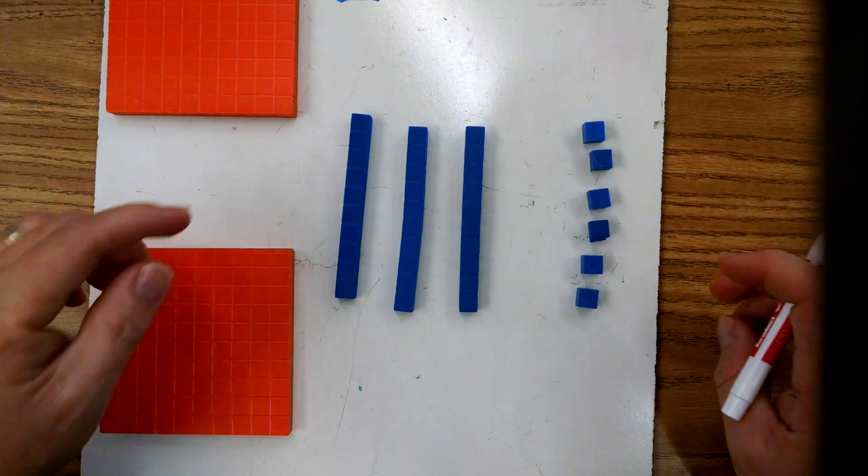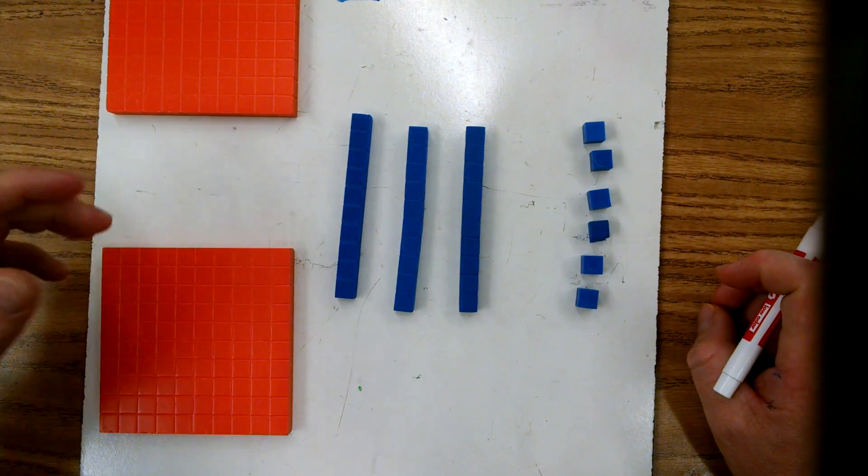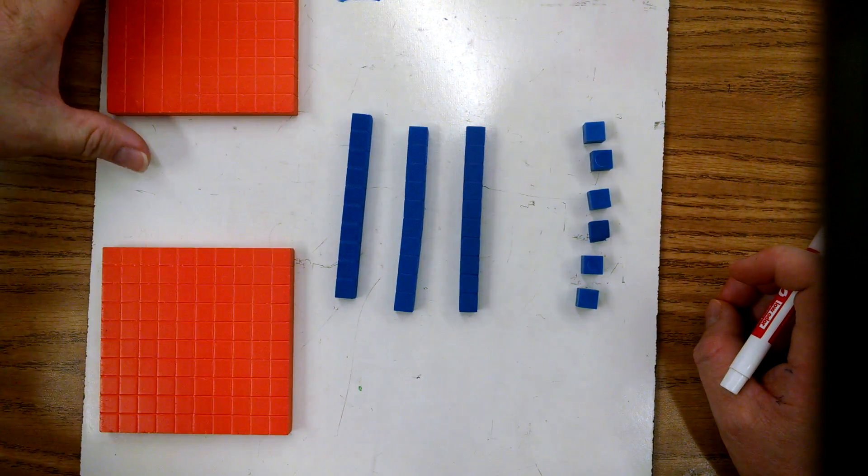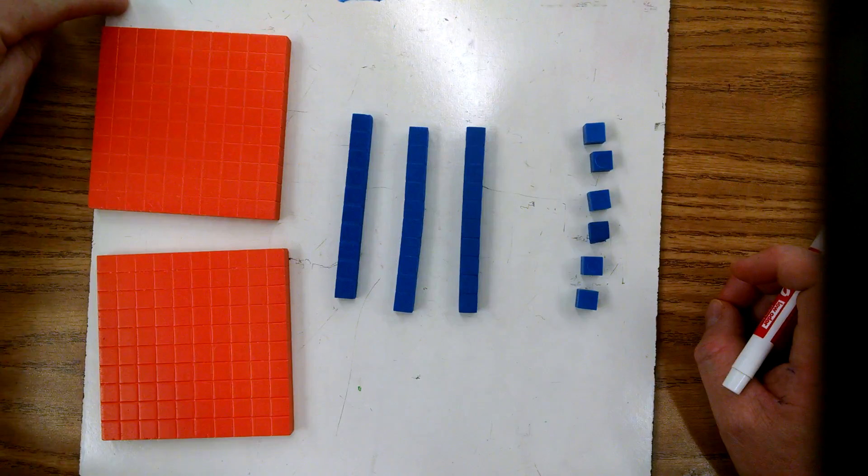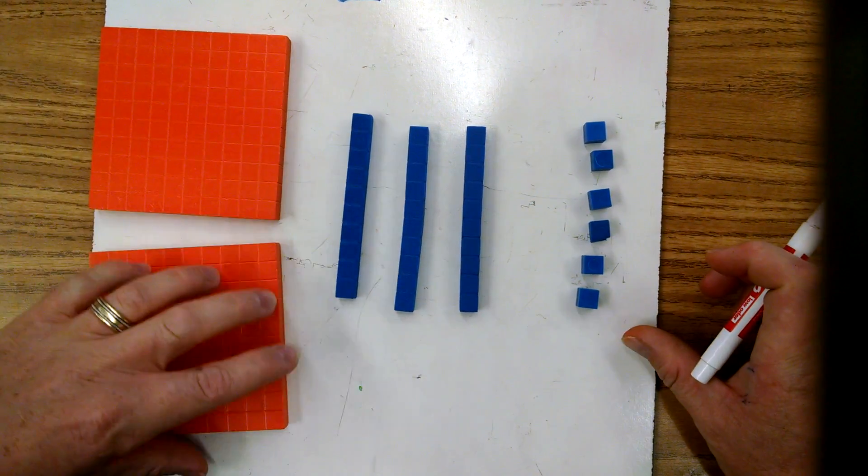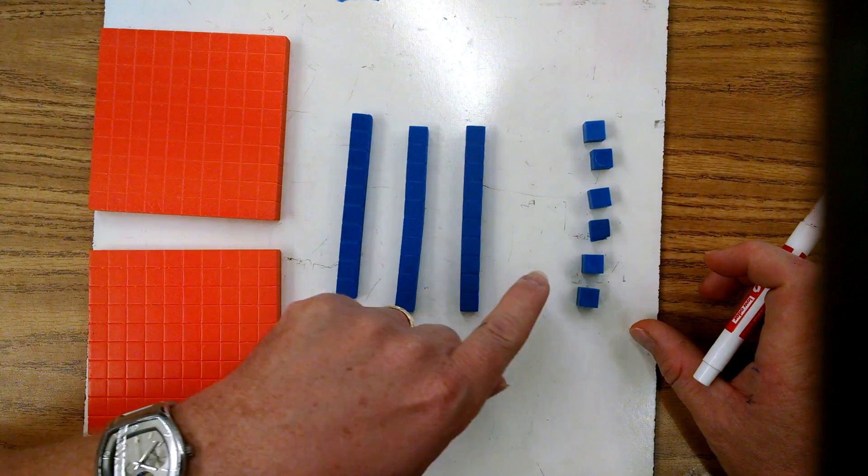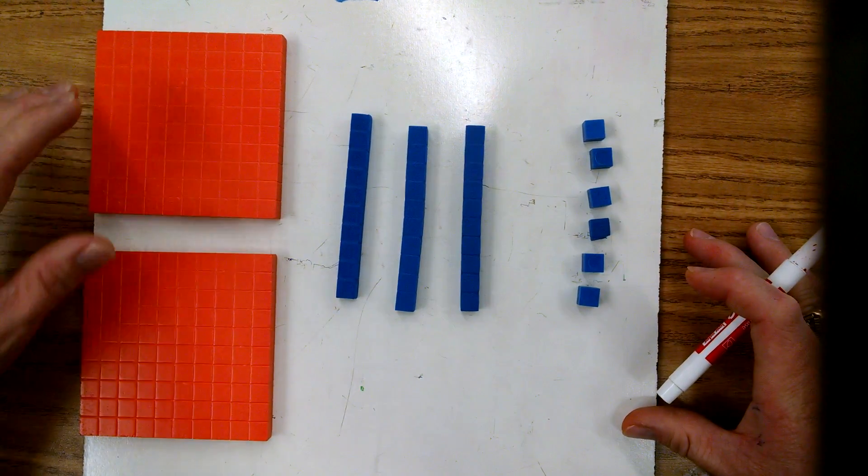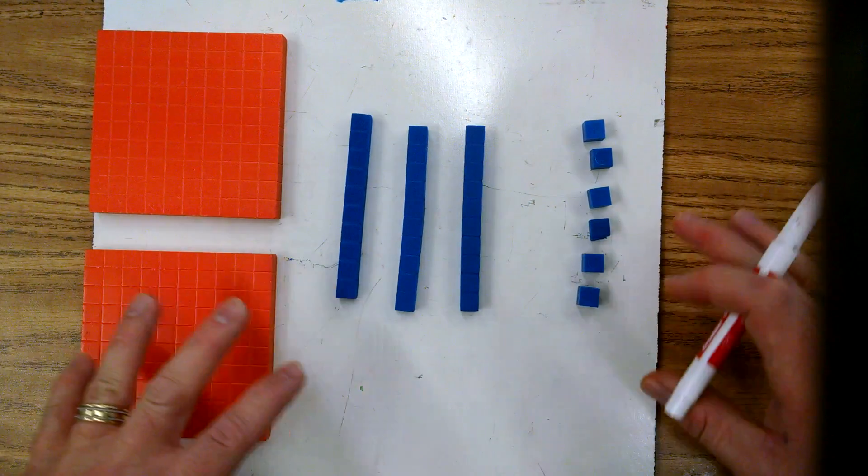What I've set up is 236, and the most common way that most people would go ahead and try to make this using blocks would be by putting two hundreds, which I've done, and three tens and six ones.